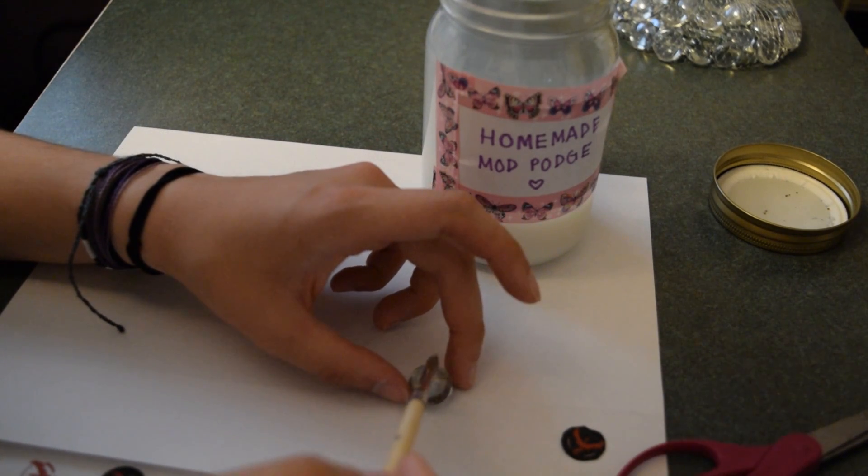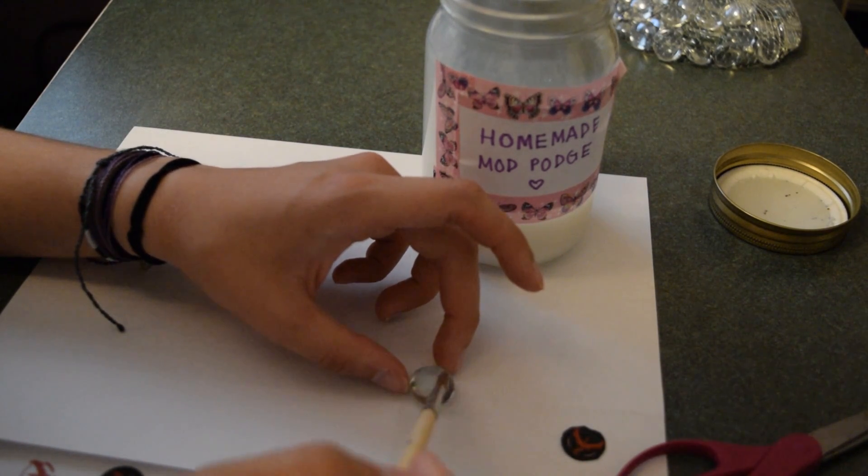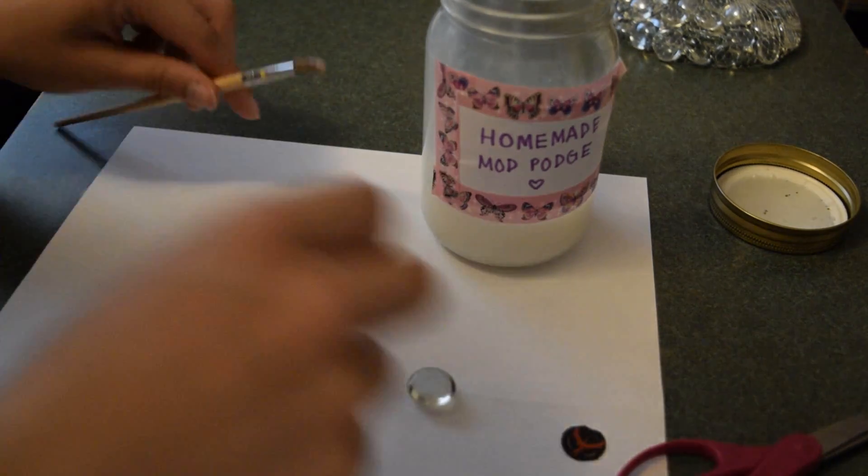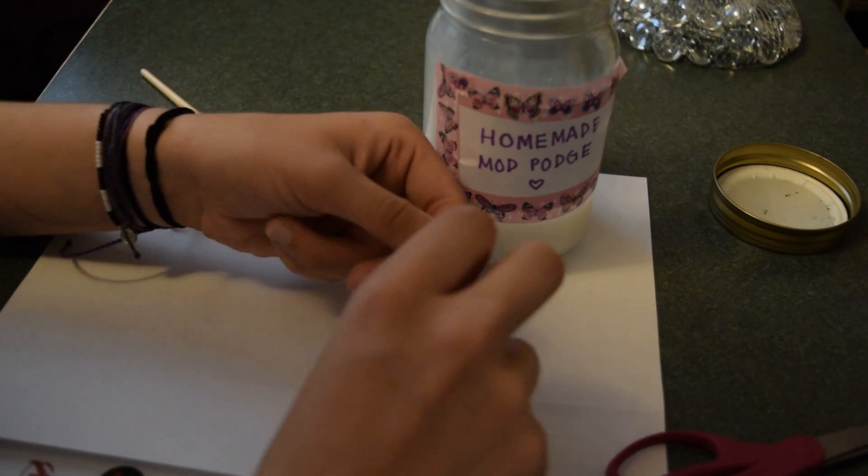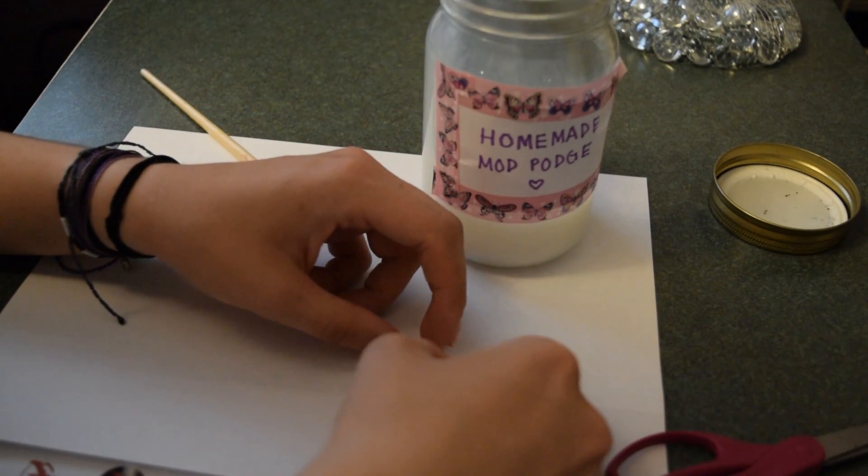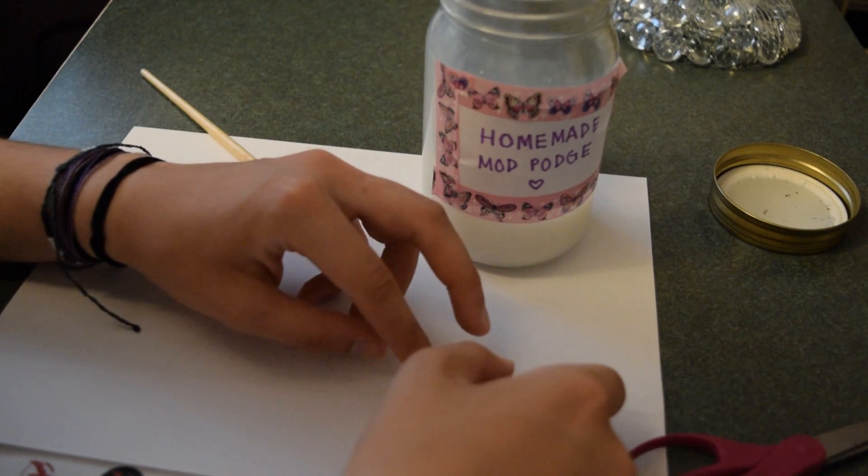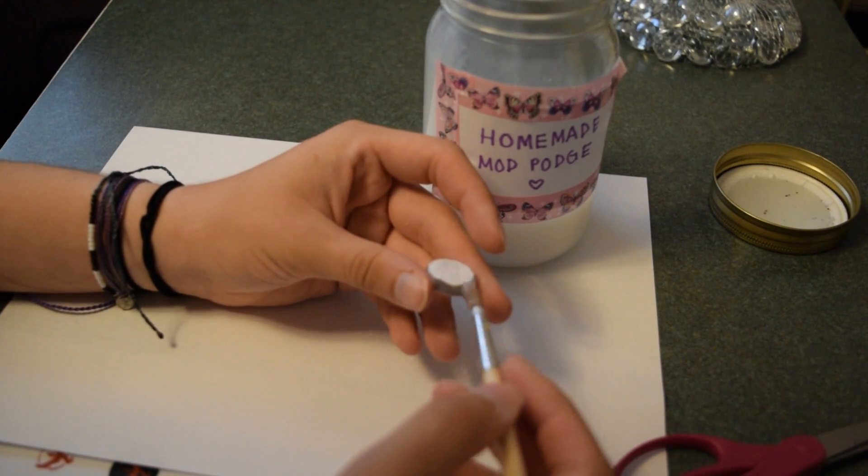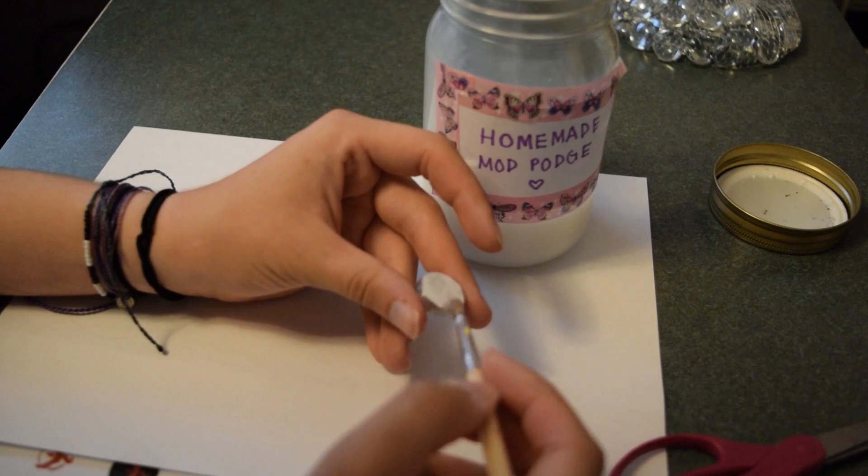Taking the paintbrush and the homemade or store-bought mod podge you chose, lightly cover the back of the gemstone and place the cut emblem face first onto the back of the gemstone. Paint on another layer of mod podge to secure the edges of the emblem and then set it aside to dry.